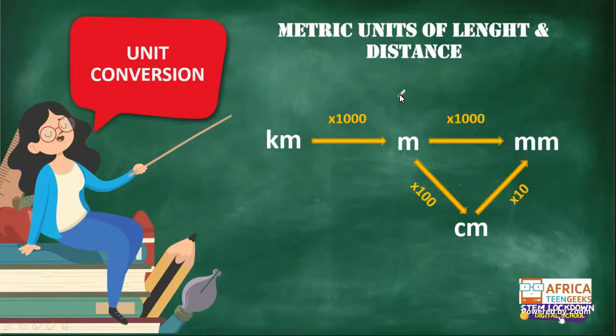Vicky asks how do we get 10. Remember, if you take your ruler and look at one centimeter and count the little millimeter lines in between, you will see there are only 10. So all our metric units work in factors of 10.